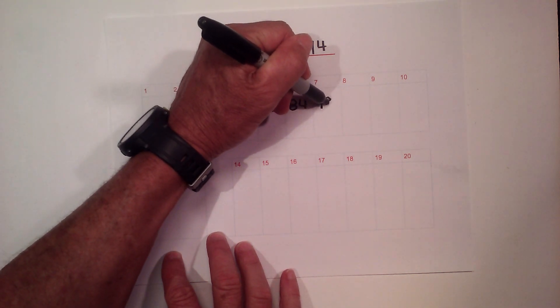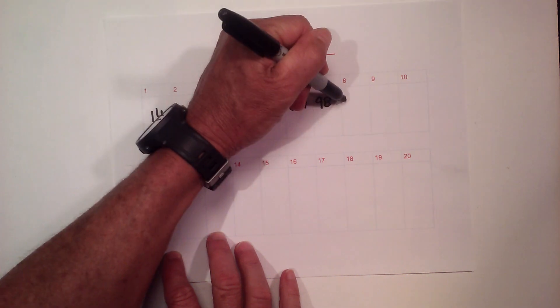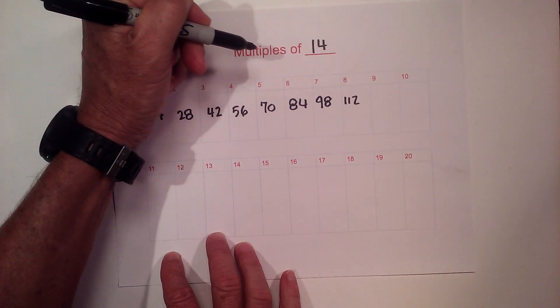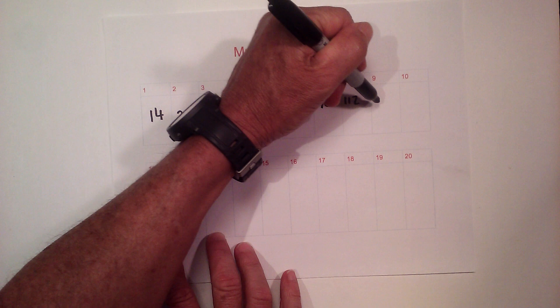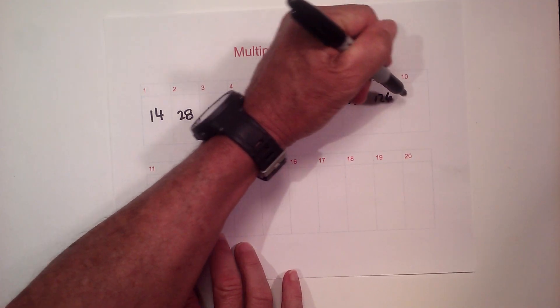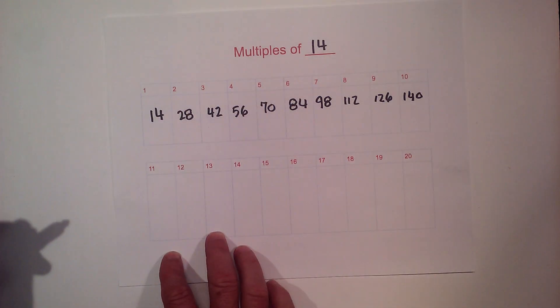Then we have 98, 112, 14 times 9 is 126, and then times 10 is 140.